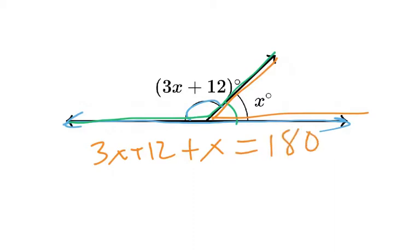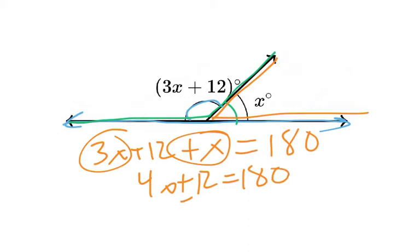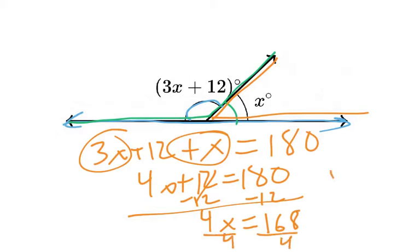So you solve it the same way. 3x, I can combine with x, that's 4x, plus 12, equals 180. Subtract 12 on both sides, same idea, same thing we've done in the past. 4x equals, what's 180 minus 12, you get 168. And then you divide by 4 on both sides, so x is equal to 42.